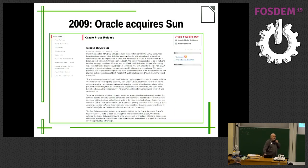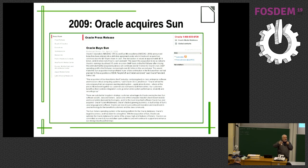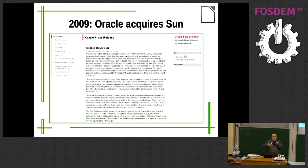In 2009, Oracle acquired Sun. The community had already started thinking about a fork, and at that point we simply sped up the discussions.